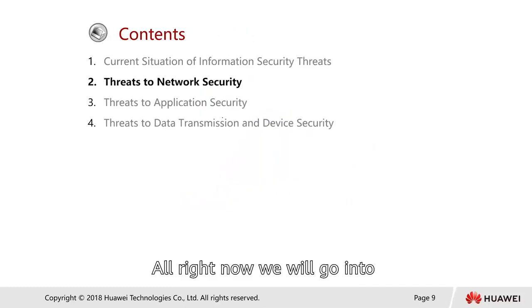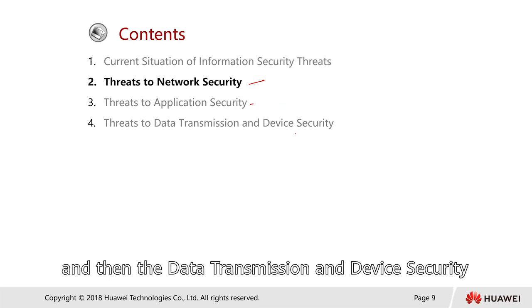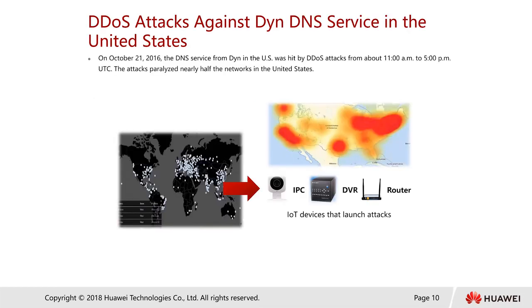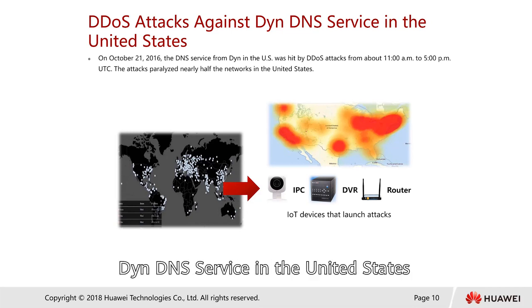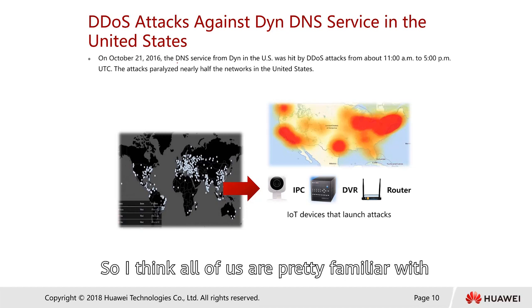We will now go into much more detail. We talked about network security, then we cover application security, and then data transmission and device security. These are attacks against Dyn DNS services in the United States, which actually happened in October 2016, so I think a lot of us are pretty familiar with this.